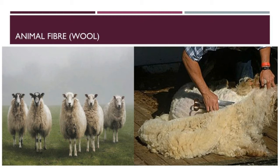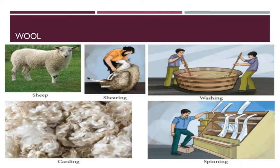Mostly wool is produced from the outer coat of sheep. The processing of wool involves five major steps: they are shearing, grading or sorting, washing or scouring, carding, and spinning.